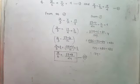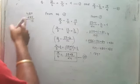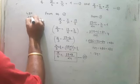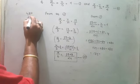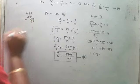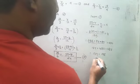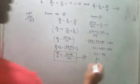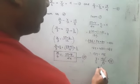So 13y is equal to 480 minus 285. 480 minus 285 is 195. Therefore y is equal to 195 by 13, and 13 goes into 195 fifteen times, so y is equal to 15.